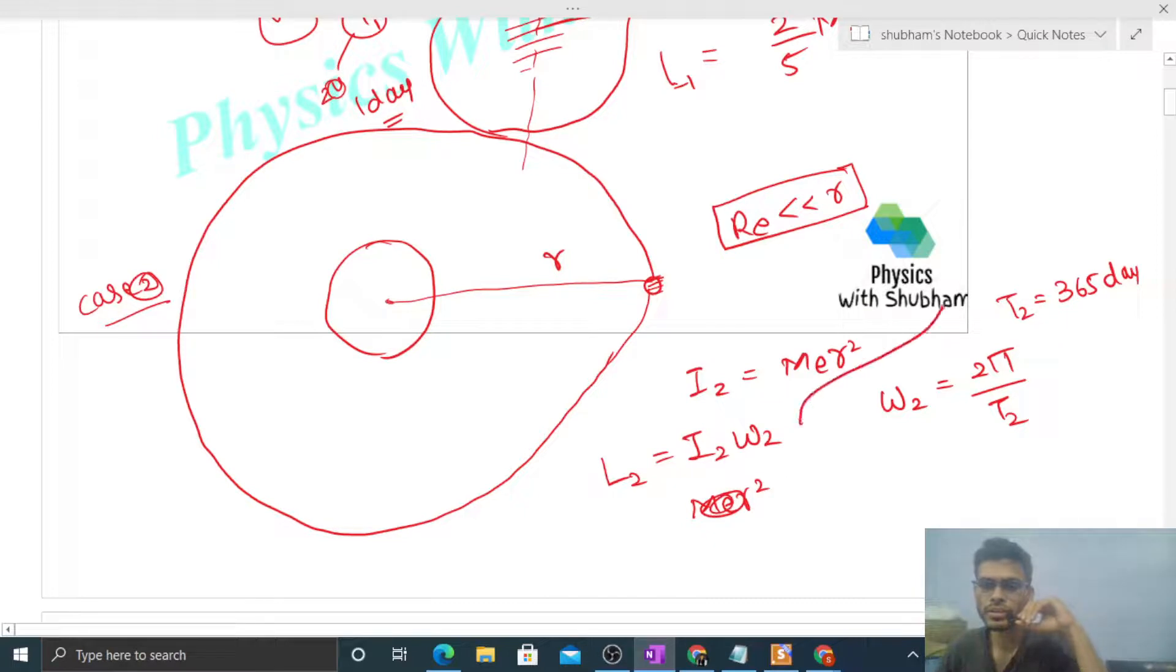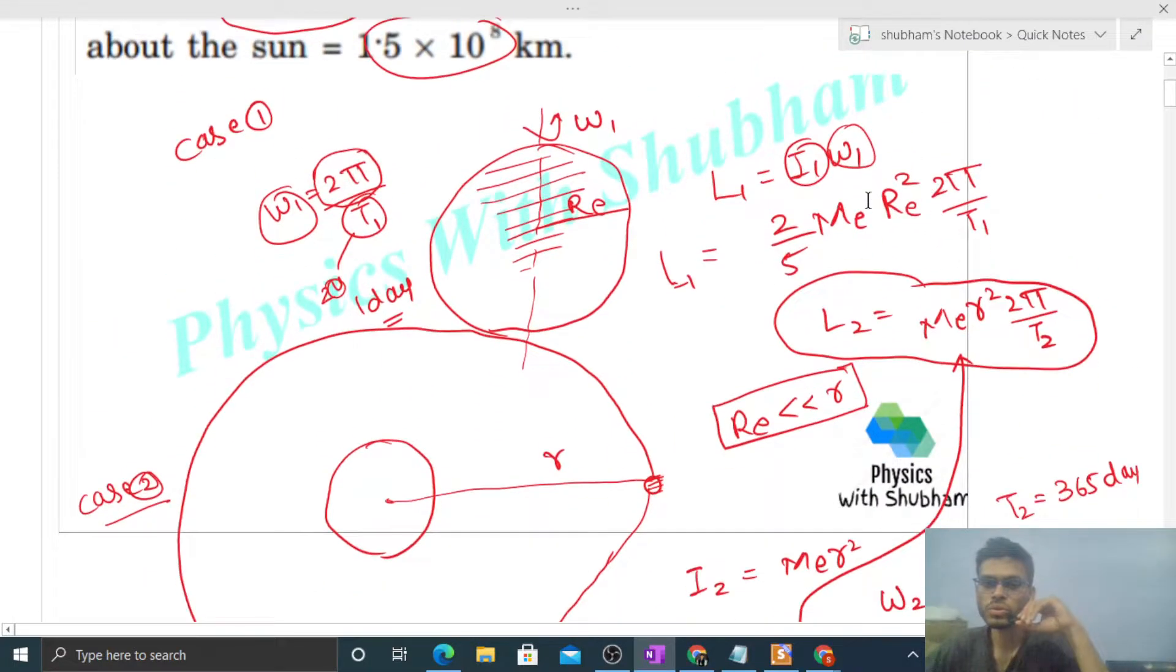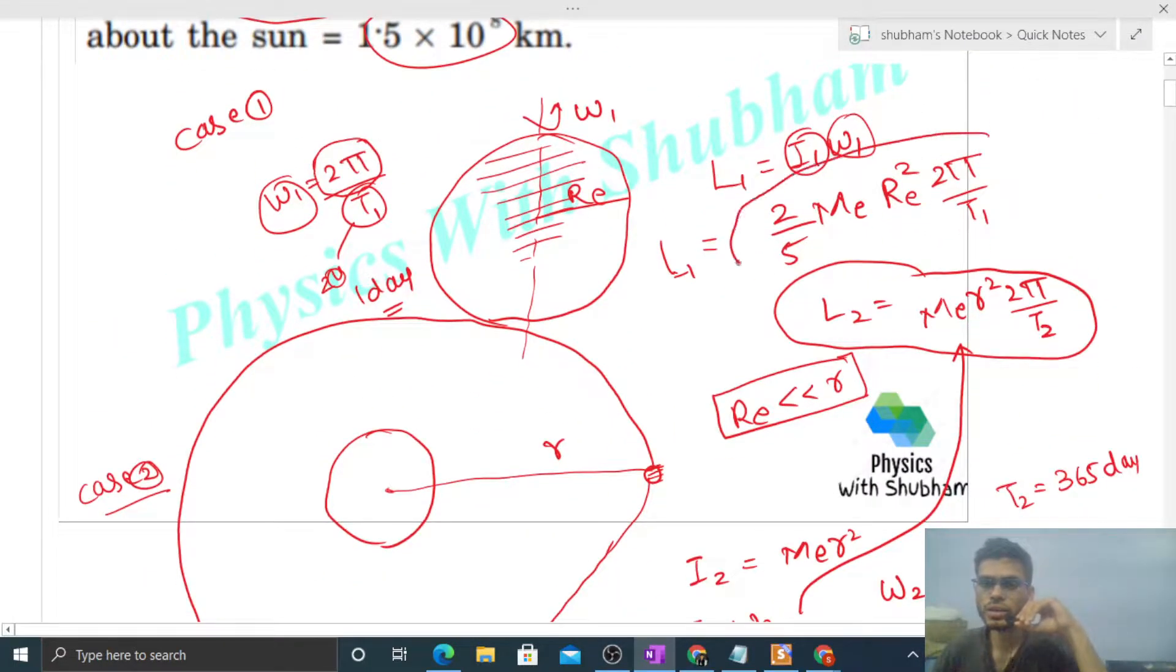Let's write it here: Me, mass of Earth, into R square and 2π upon T2. This is the value of L2. Now we have to take the ratio. So L1 is this and L2 is this, so let's check L1 by L2.